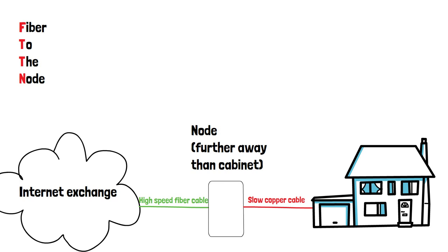This type of fiber internet can be faster than traditional DSL or cable internet, but may be less reliable due to the limitations of copper wiring over long distances.